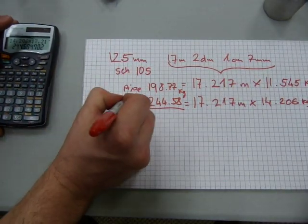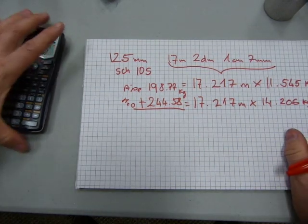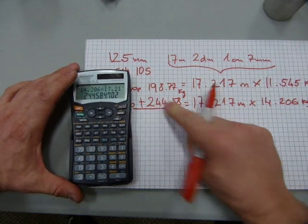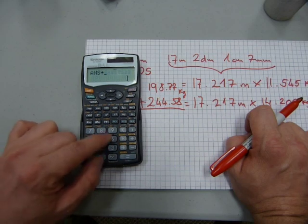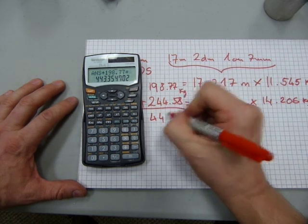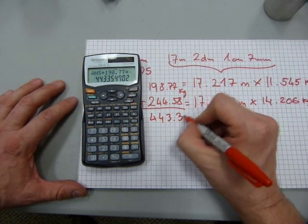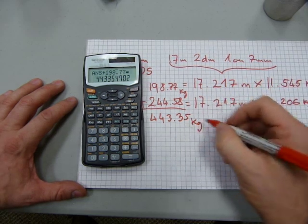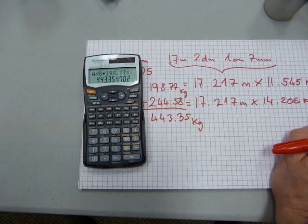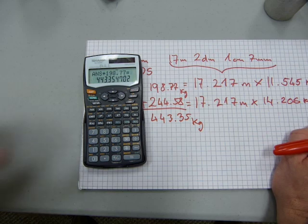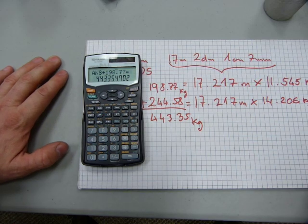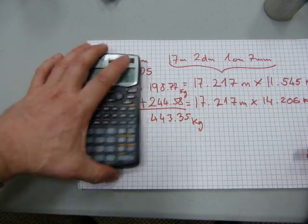So now we need to add 244.58 plus the 198.77. It's 443.35 kilograms. Plus you don't need grams and whatever. You just need to know it's 443 kilograms plus a little bit of change. So that is quite heavy. That's about a third of a passenger vehicle's weight. 443 kilograms.